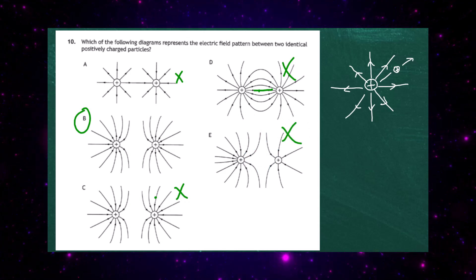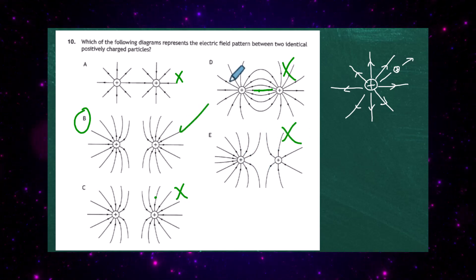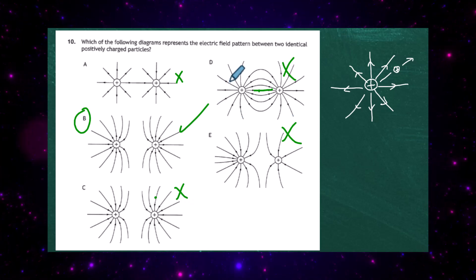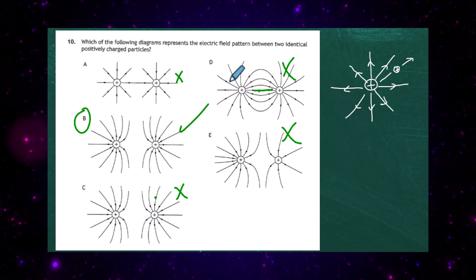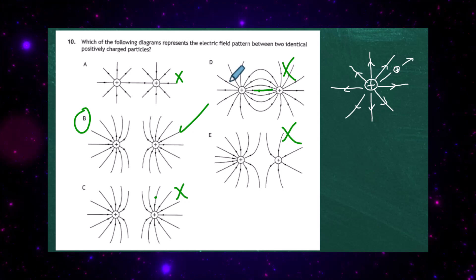So the correct answer is diagram B, showing the repulsive nature of the two positive charges in all its glory.